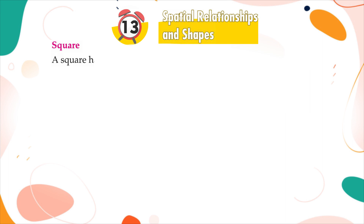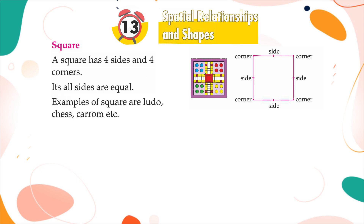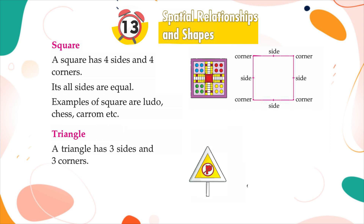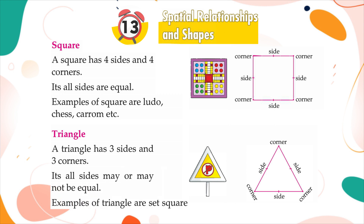Square: A square has four sides and four corners. Its all sides are equal. Examples of square are ludo, chess, carom, etc. Triangle: A triangle has three sides and three corners. Its all sides may or may not be equal. Examples of triangle are set square, pizza slice, triangular board, etc.